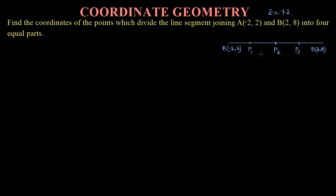I have discussed earlier this kind of problem where the ratio is not given directly, but you can find it out. If I am using the section formula to solve this problem and finding the value of P1, I need the ratio. From A to P1 it will be 1, and from P1 to B it will be 3. So M1 will be 1 and M2 will be 3 when using the section formula. In the same way, you find the ratios for all points and find all coordinates.